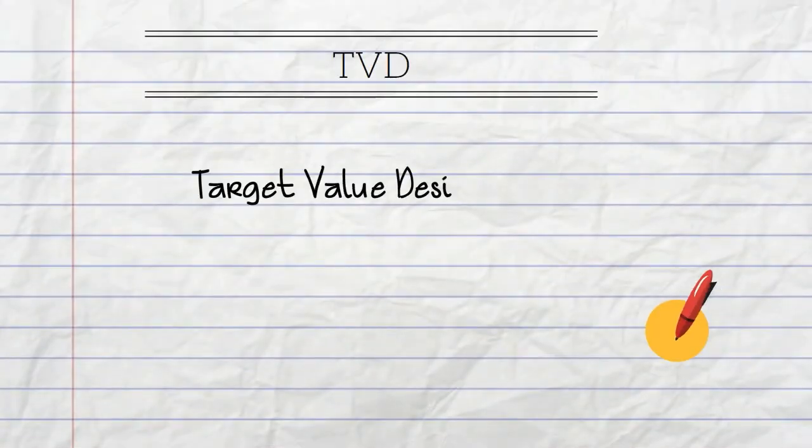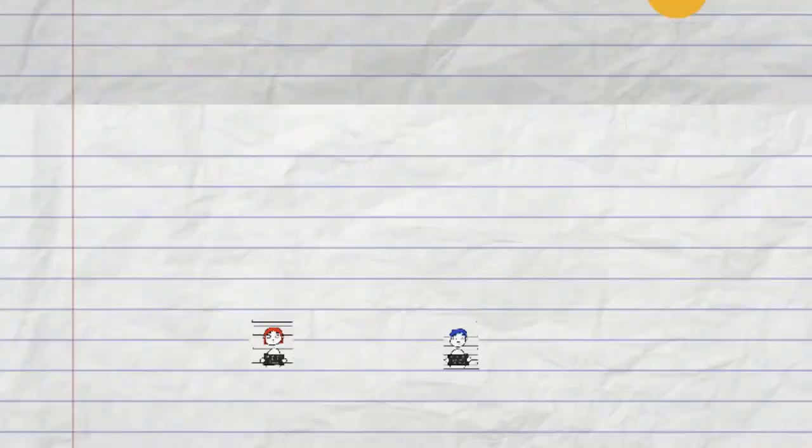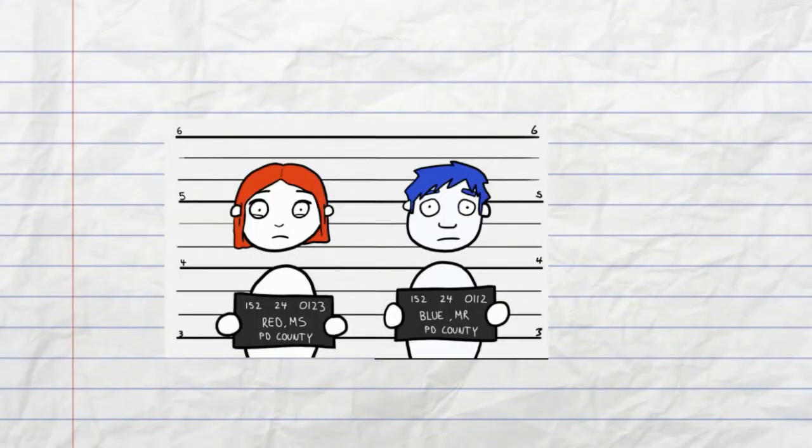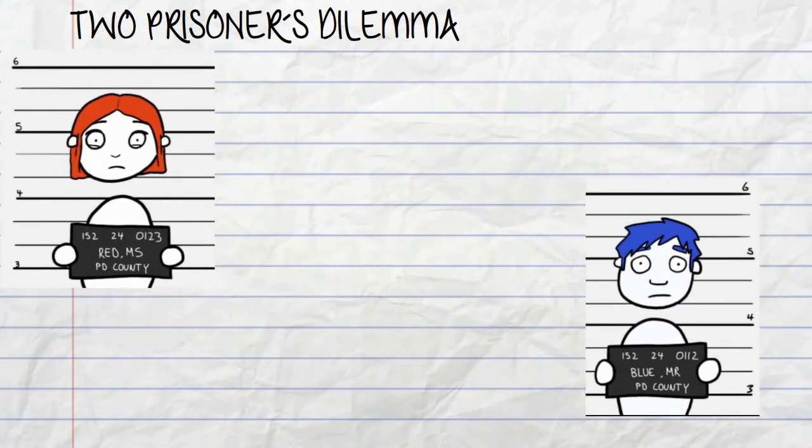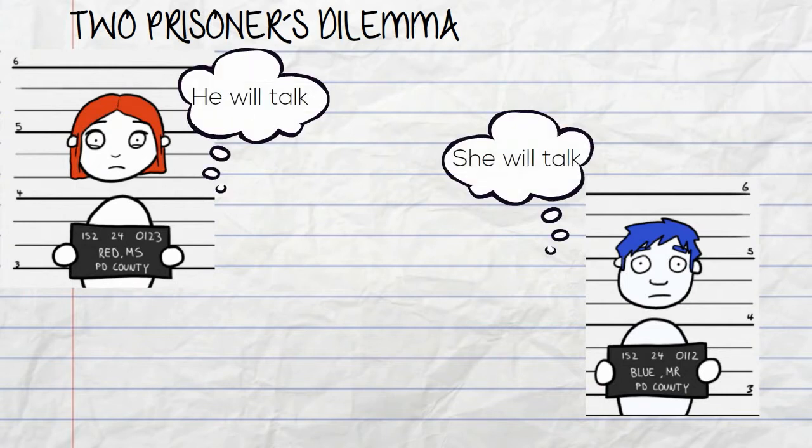Let's talk first about TVD, or Target Value Design. Imagine two people who committed a crime, locked in separate jail cells. They tend not to cooperate even if their cooperation could bring maximum benefits to both of them. Why? Because each one suspects the possibility of being betrayed by the other.